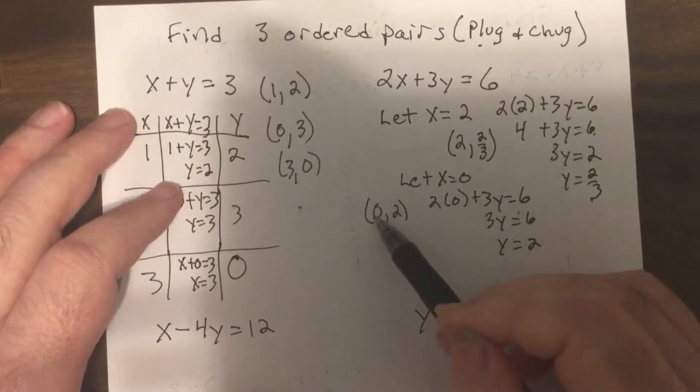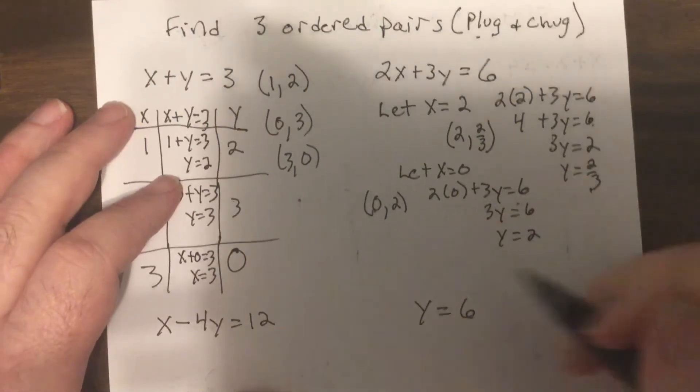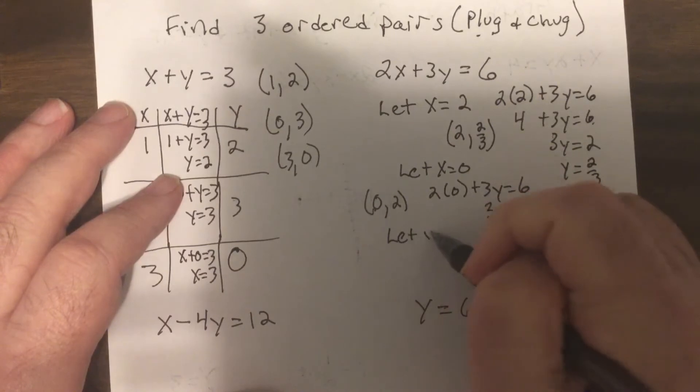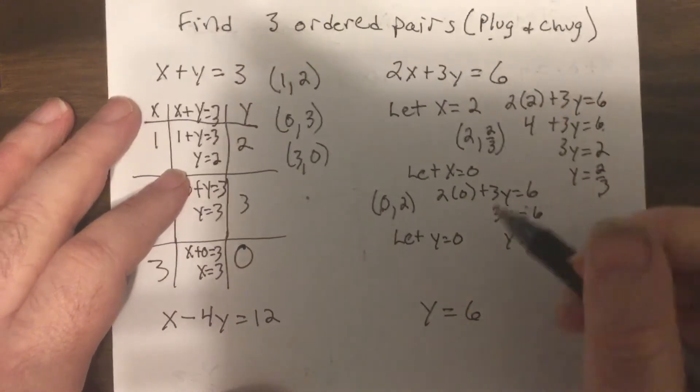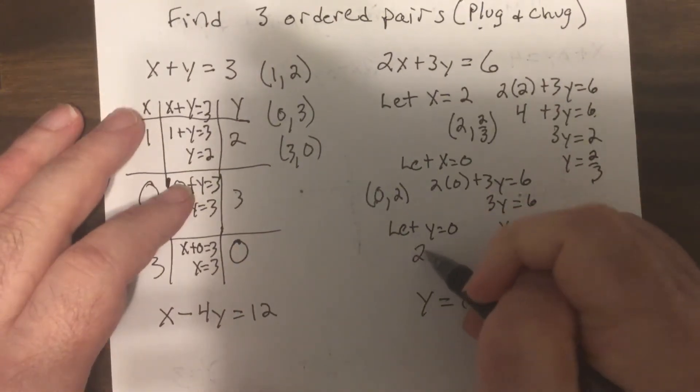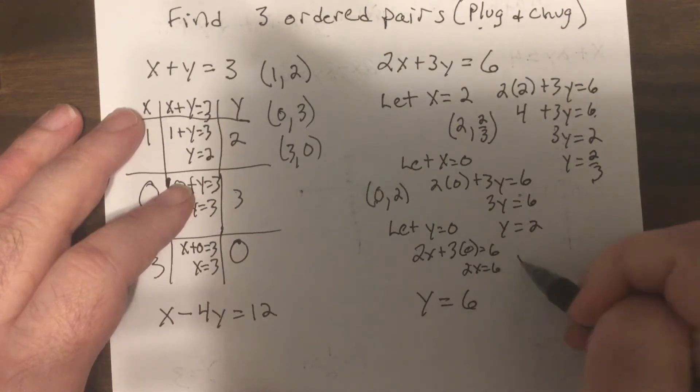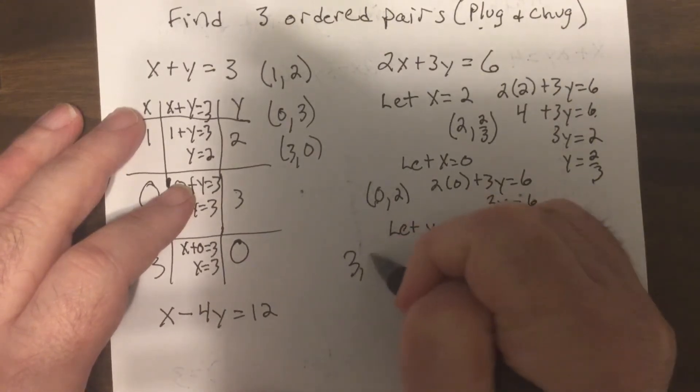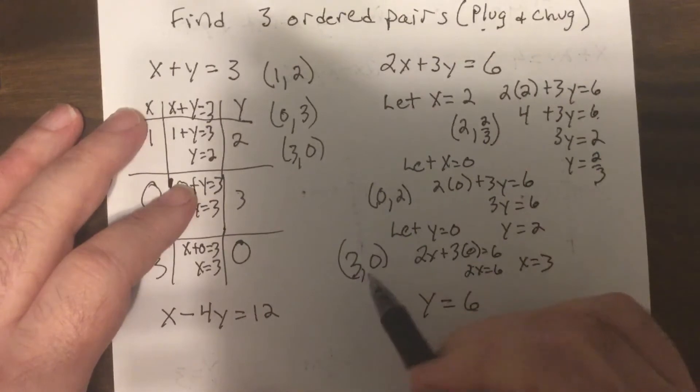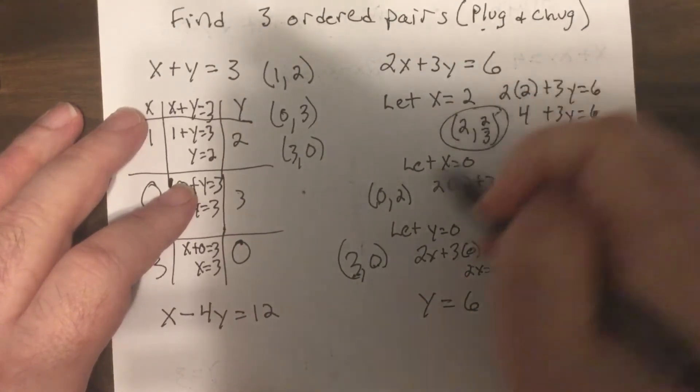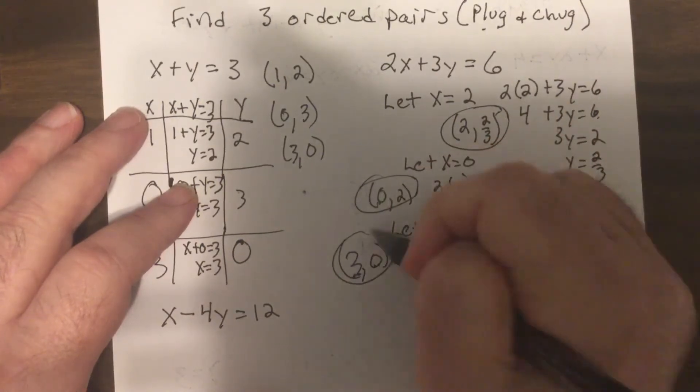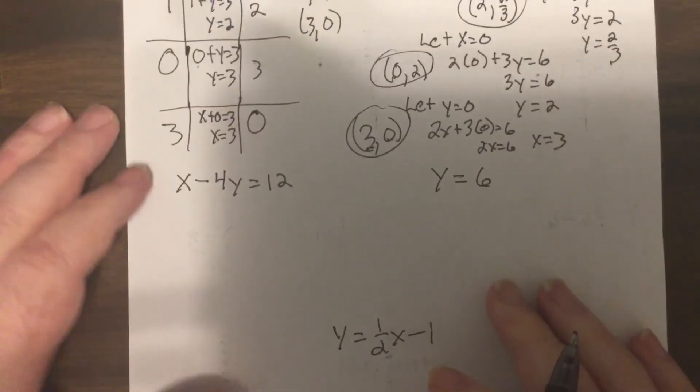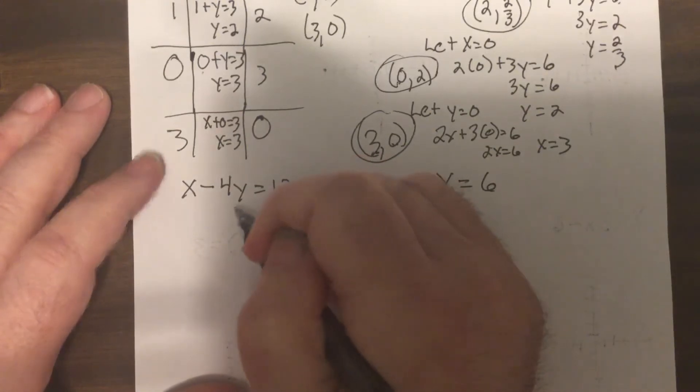So let X equals zero. I'd have two times zero plus three Y equals six, so three Y equals six, so Y equals two. So the Y intercept is zero, two. How do I know it's the Y intercept? Because I put zero in for X. Then let Y equal zero. Two X equals six, so X equals three. So the other ordered pair would be three, zero. That's your X intercept because I put zero in for Y.